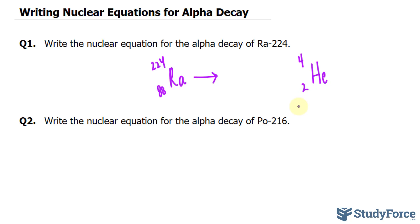Next, we want to equalize the sum of the mass number and the sum of the atomic numbers. So what I'll do is subtract four from 224, which gives us 220, and subtract two from 88, that's 86.